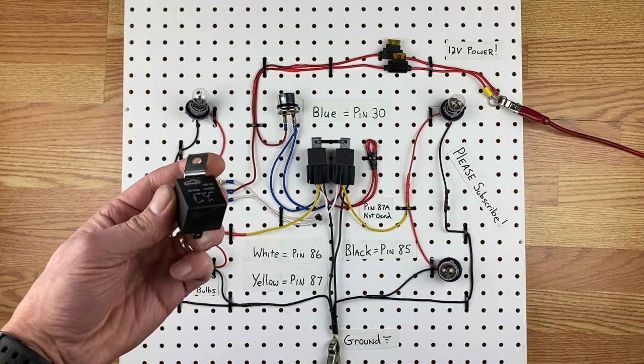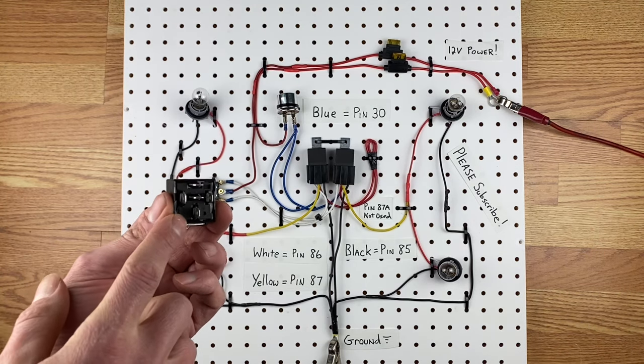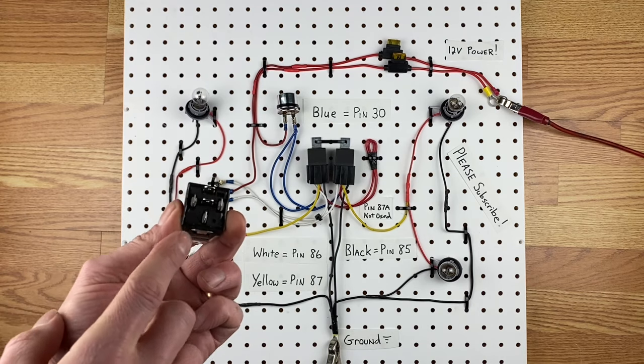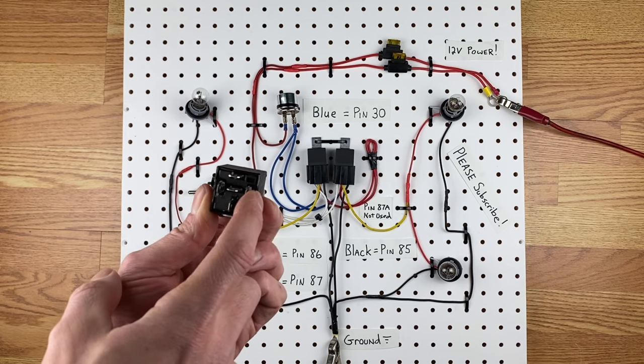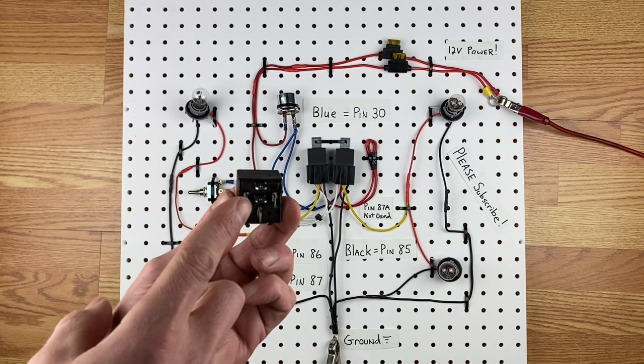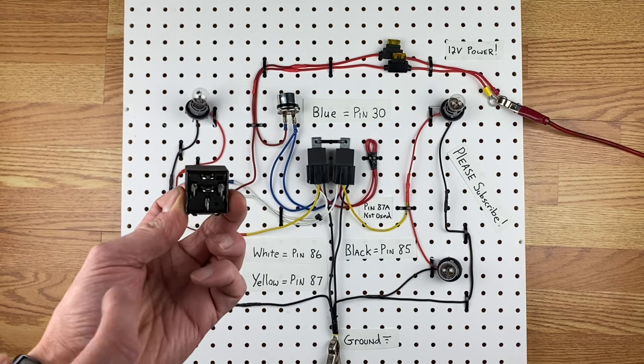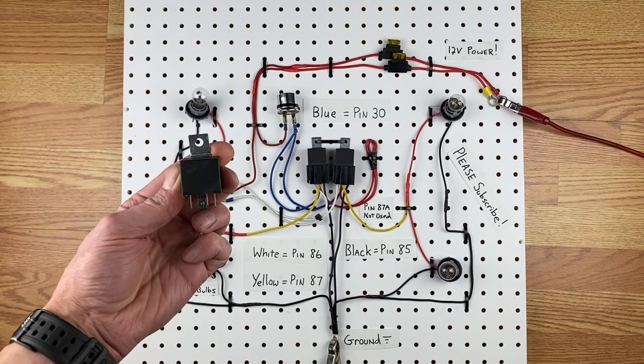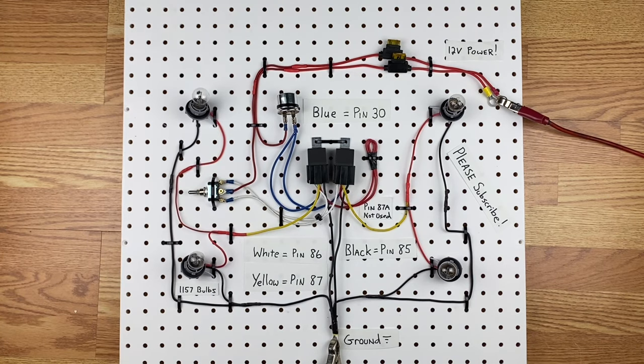These Bosch style relays are awesome because they can be used for a variety of reasons and they're even labeled on the bottom and sometimes on the top. This one you can see is pin 86 on the left, 85 on the right, 87 on the top, pin 30 on the bottom, and 87A in the middle which we're not going to use. Now if you turn it like this, you'll see it's exactly the same one that I have down there. So let's go through the wiring.